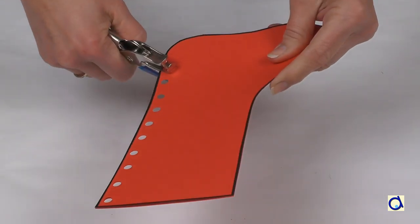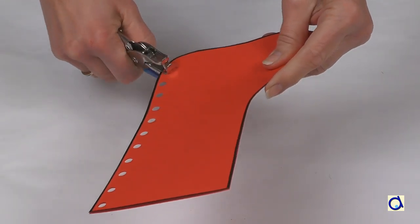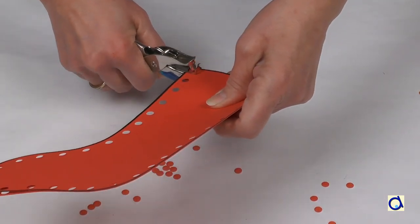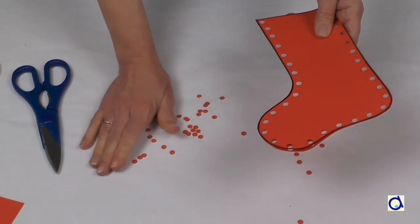Using a one-hole punch, punch holes all along the edge of the stocking through the two layers of construction paper. Do not make holes in the top of the stocking.